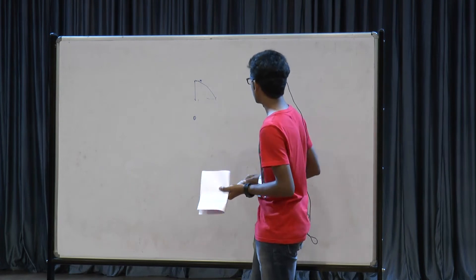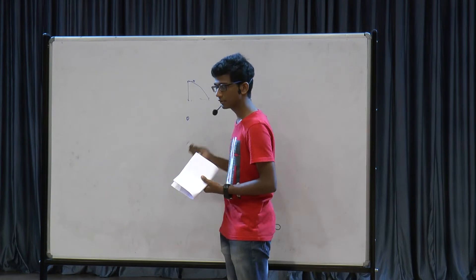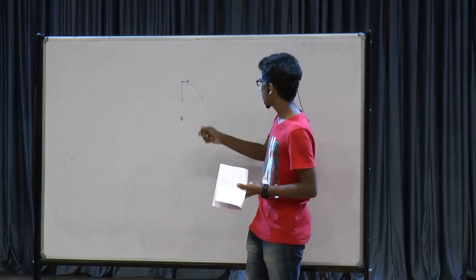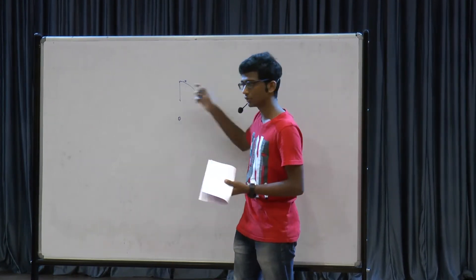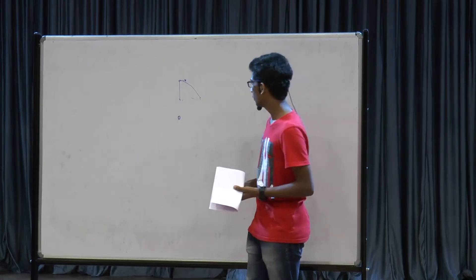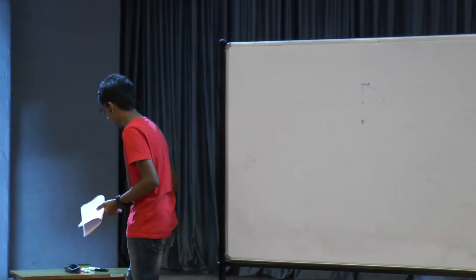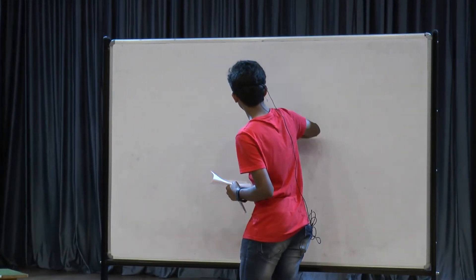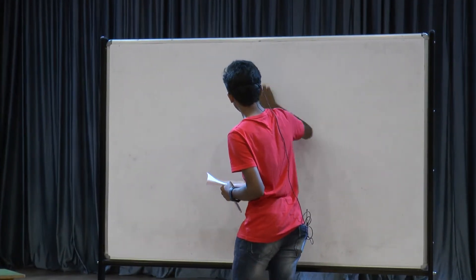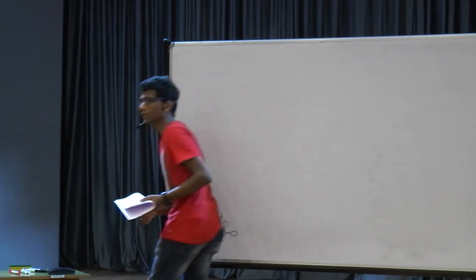Similarly, Earth falls onto the Sun because of this gravitational force, and because of its initial velocity, it goes on in some orbit. In today's lecture, I will try to prove to you that the shape of this orbit that the Earth takes around the Sun is elliptical.